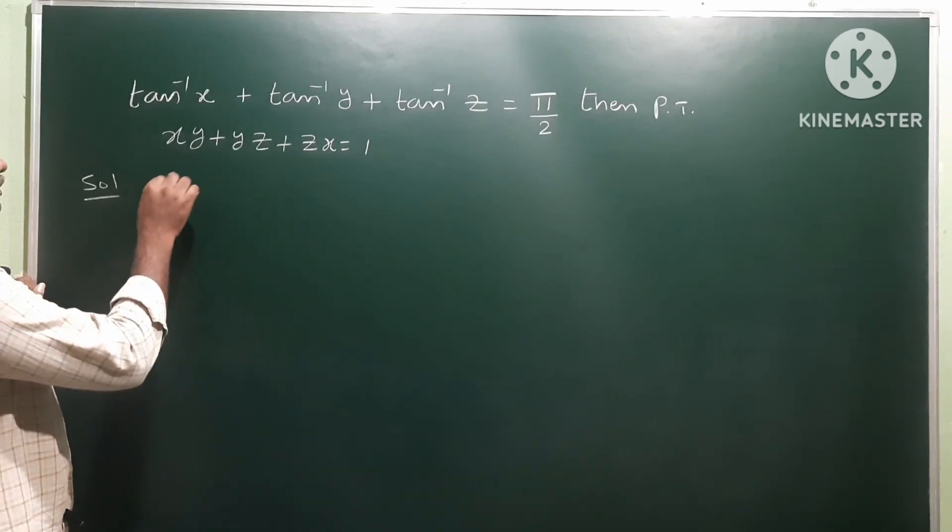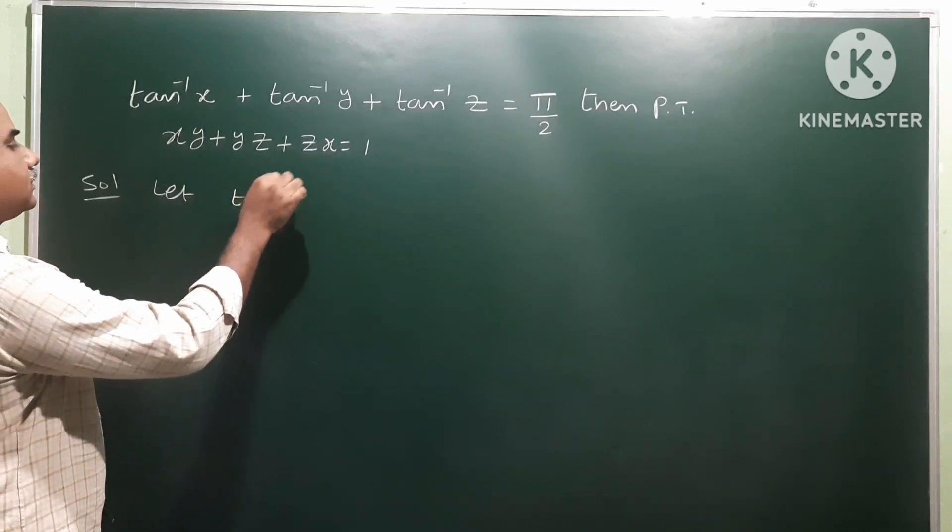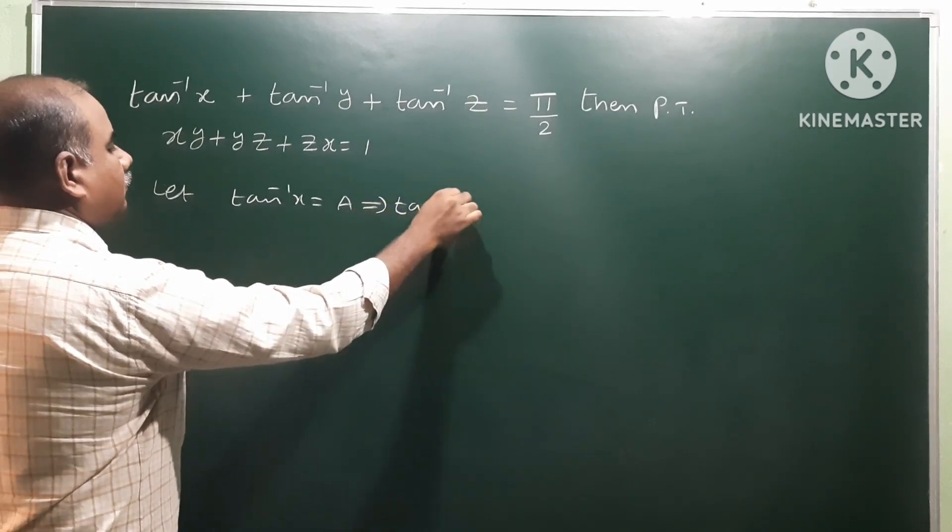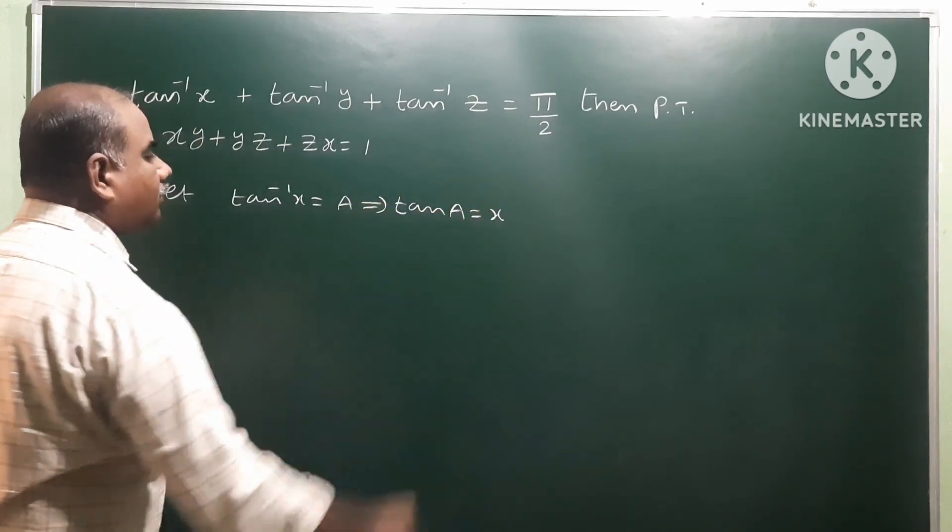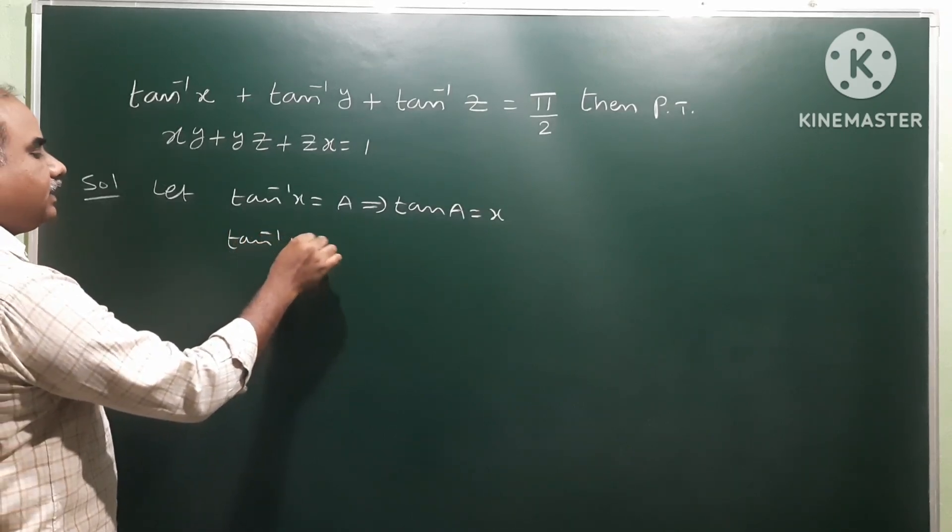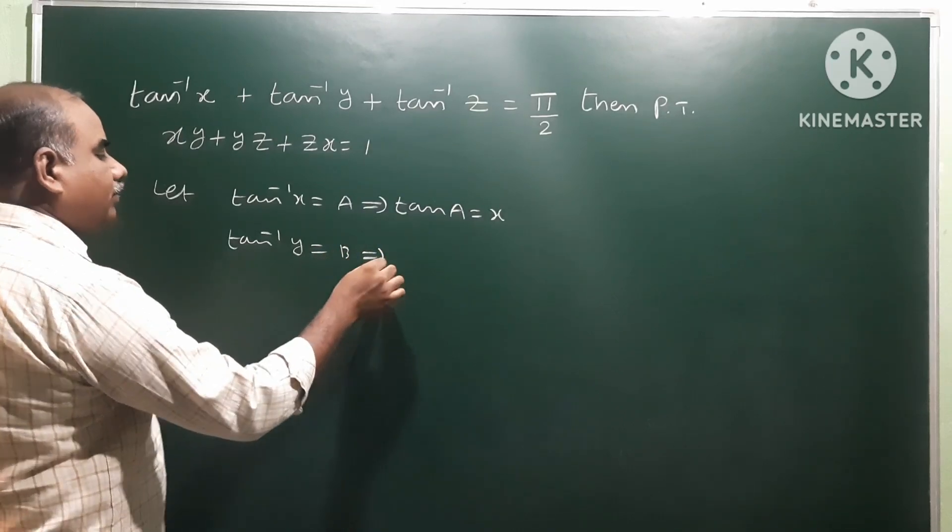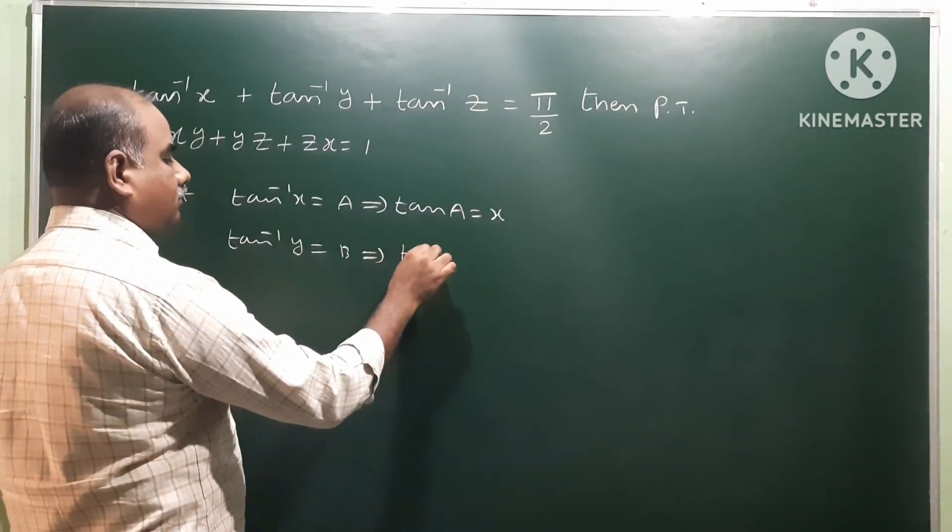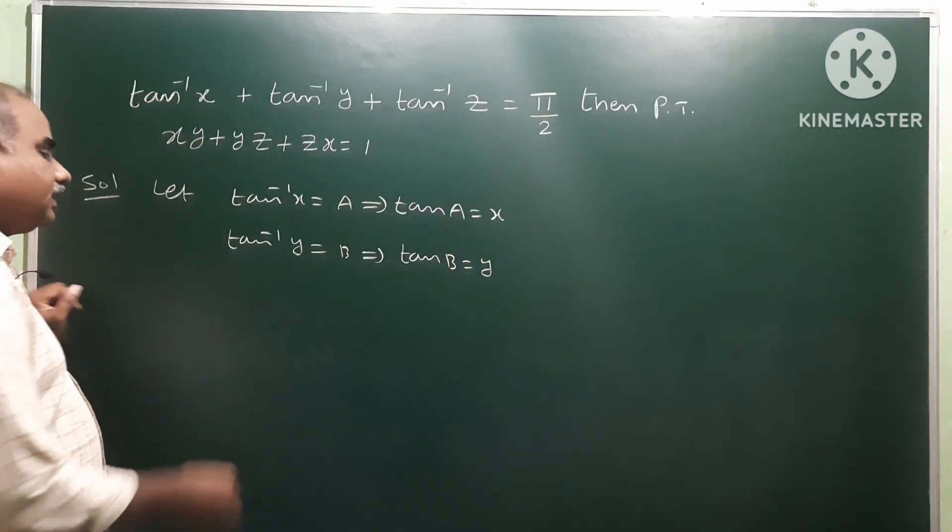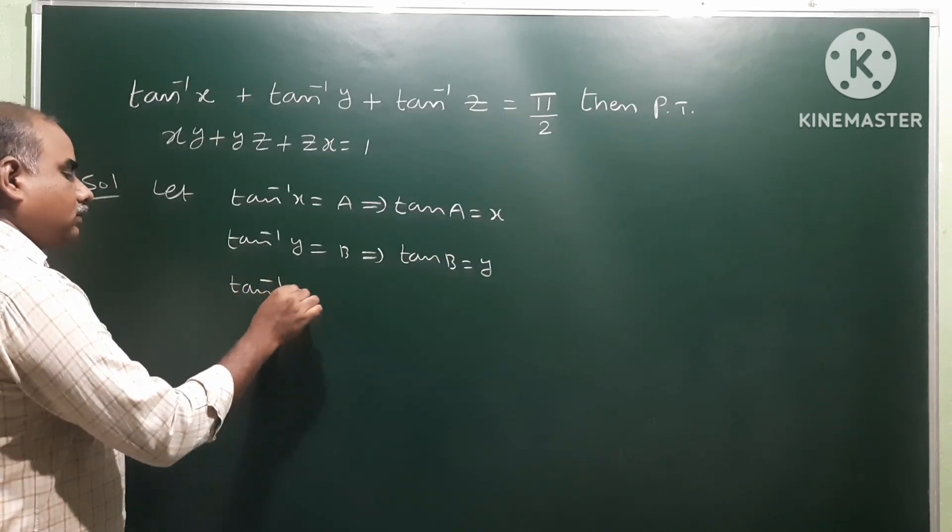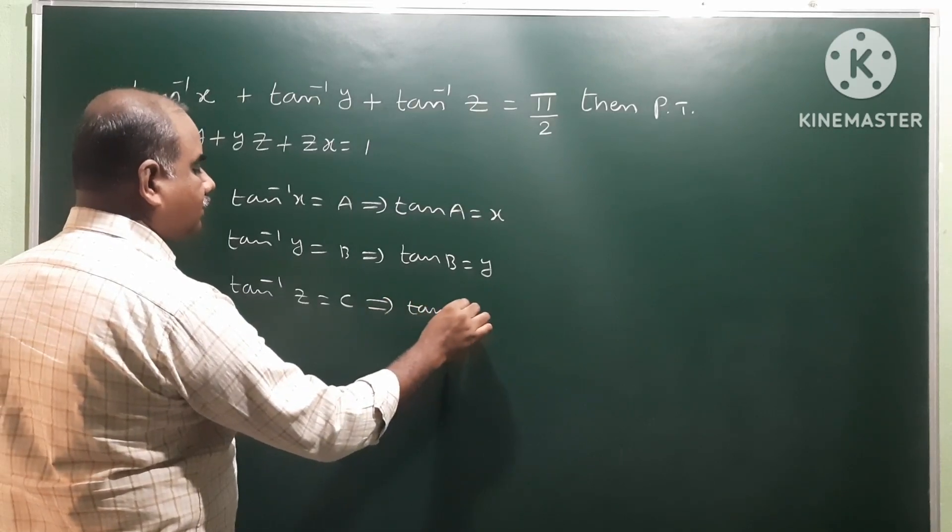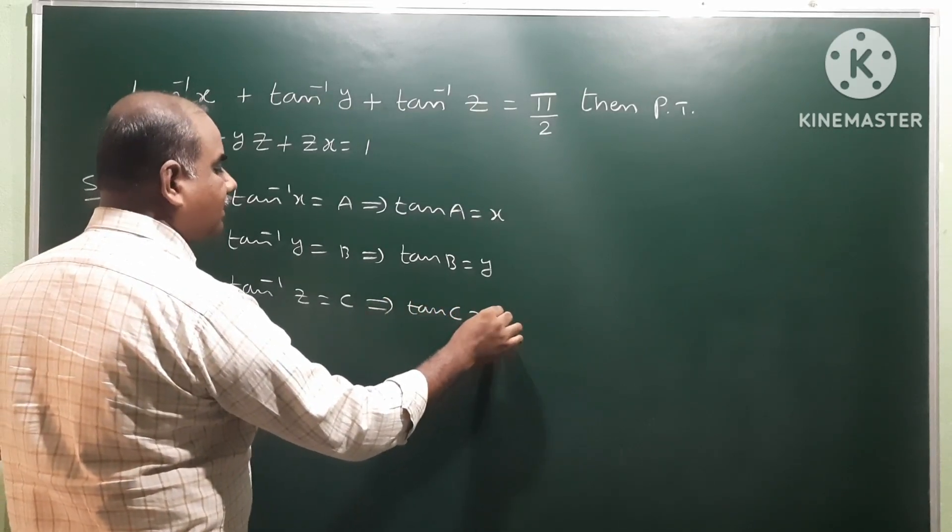So, let us take tan inverse x as a, then we have tan a is equal to x. And second one, tan inverse y as b, that implies tan b is equal to y. And third one, tan inverse z as c, that implies we get tan c as z.